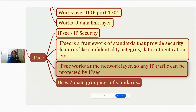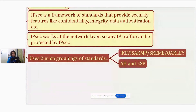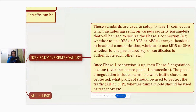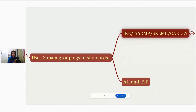Now let's talk about the two main groupings of standards when it comes to IPsec. The first grouping is IKE and ISAKMP. And then the second one is AH and ESP. Let me explain the role that these two standards play — ISAKMP and AH and ESP.